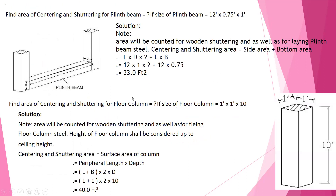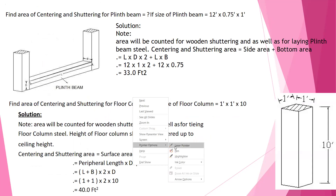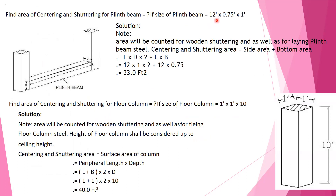Now let us talk about a plinth beam area — how to do shuttering. The plinth beam is 12 feet by 9 inches, that is 0.75, into 1 foot. Area will be counted for the entire wooden shuttering area. The formula is: length into depth into 2 plus length into breadth — the two sides plus the bottom. That is 12 feet into 1 foot into 2, plus 12 feet into 9 inches (0.75), that is 33 square feet.